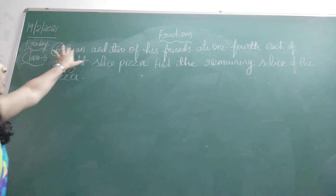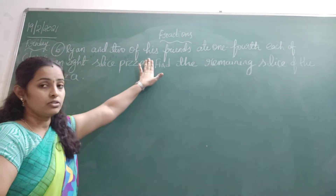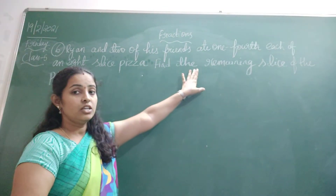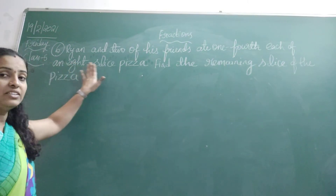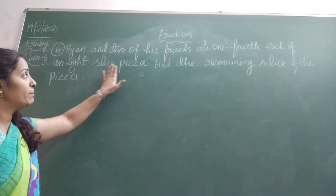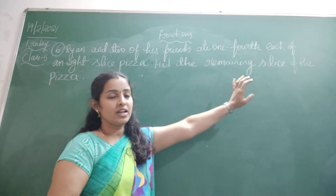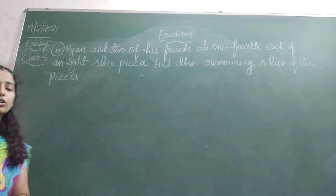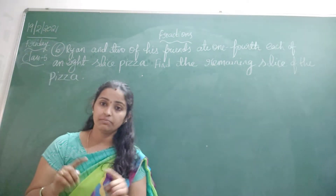Dreyan and two of his friends each ate one-fourth of an eight-slice pizza. Find the remaining slices of the pizza. So here, what the question is about — it is a question about the pizza.